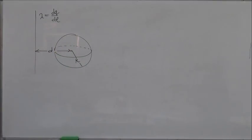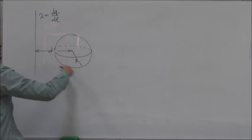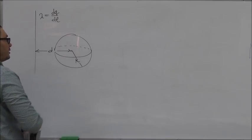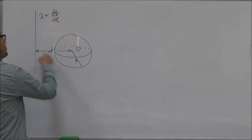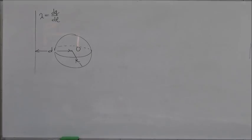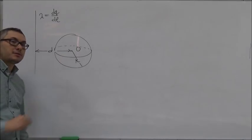In this problem, we are given a linear charge with the charge density dQ/dL, lambda. And then we have a sphere with the center O at a distance D from the line charge. And the radius of the sphere is equal to R.